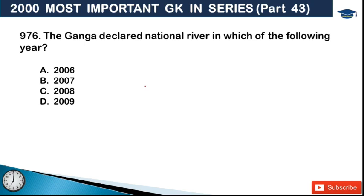Next: the Ganga was declared national river in which of the following years? Options are 2006, 2007, 2008, and 2009. The answer is 2008. On November 4, 2008, the Ganga was declared our national river.